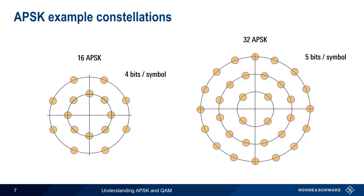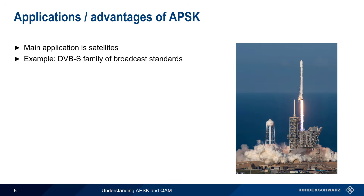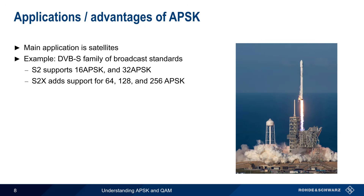Note, however, that other arrangements of the 32 symbols are also possible, such as a 32 APSK constellation with four amplitude levels. Satellites are probably the most important application of APSK, and APSK is part of the DVB-S, or Digital Video Broadcast Satellite, specifications. In addition to other modulation types, the DVB-S2 standard includes support for 16 APSK and 32 APSK. The newer DVB-S2X standard adds support for 64, 128, and 256 APSK.